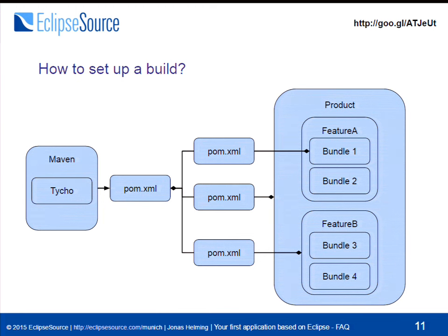You have a POM for every bundle, a POM for every feature, and a POM for one more artifact called a product. A product is basically a collection of bundles and features, and it adds branding information like an icon and which class should be executed on startup. A product can be built with Maven Tycho to finally create a launchable application.